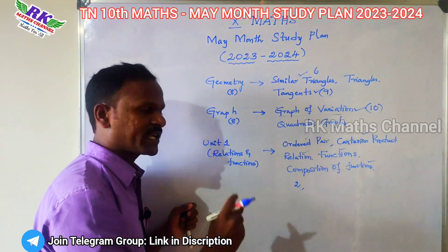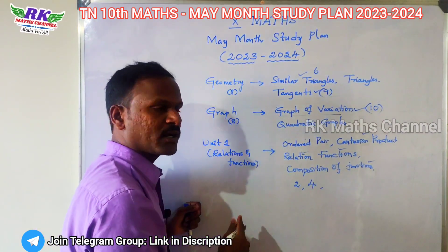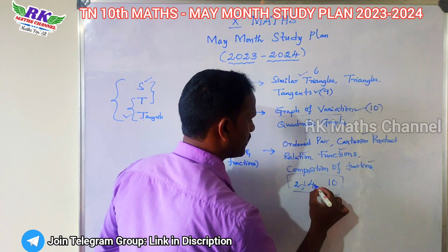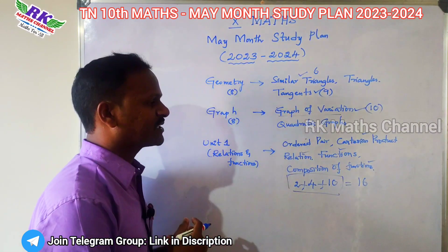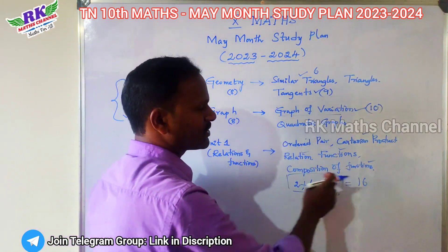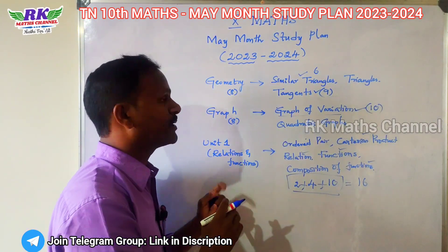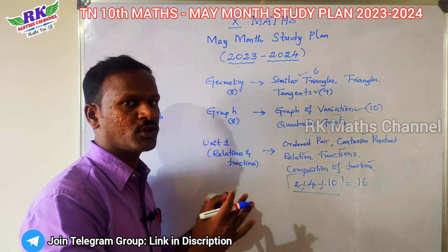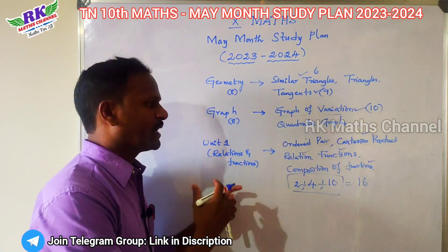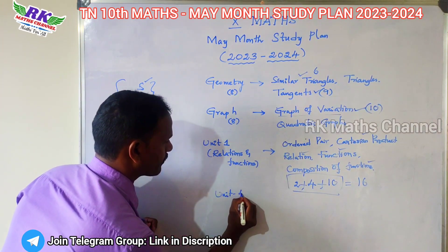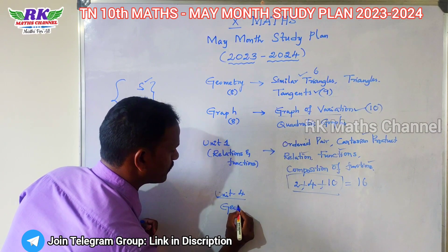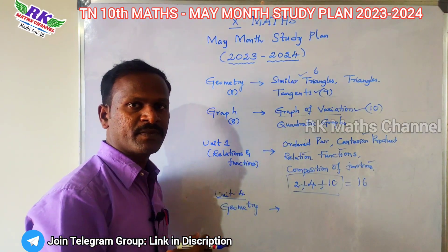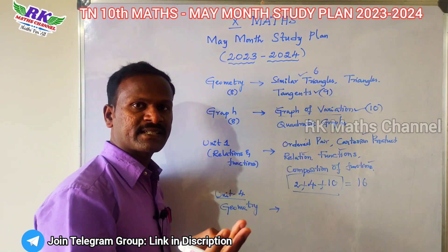Two-mark questions — two questions, four marks. Five-mark and ten-mark questions. Marks breakdown: two marks, three marks, six marks — five, six, five, six. Pythagoras theorem: six marks.